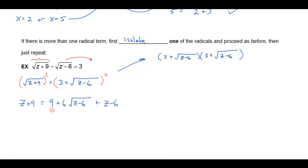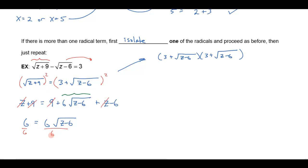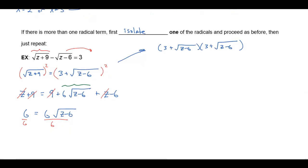Now notice at this stage I have a z on both sides of the equation. I can subtract z from both sides so that will go away. I can also subtract 9 from both sides and that would go away. Originally I had 2 square roots — once I isolate the radical and square both sides, I get down to 1 square root and then I can just do it again. Let's take this negative 6 that didn't cancel out over on the other side, and I'll divide both sides by 6 to make my numbers smaller. When I do that, I'm going to get 1 on this side is equal to the square root of z minus 6.